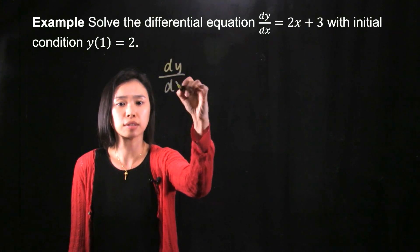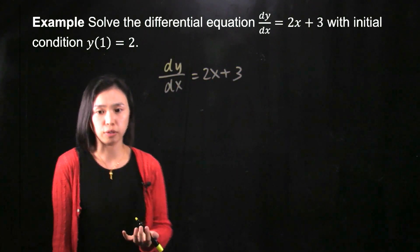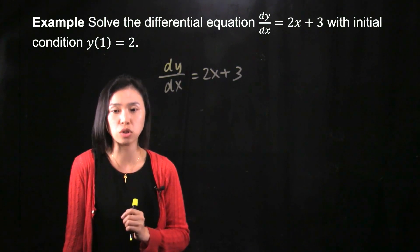All right, so dy/dx is 2x + 3. This is a very simple type of differential equation. What we need to do is integrate both sides of the equation.